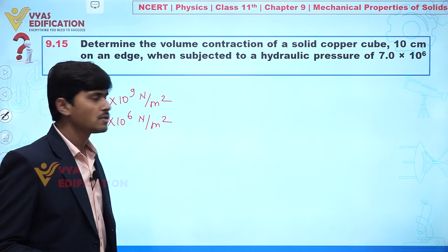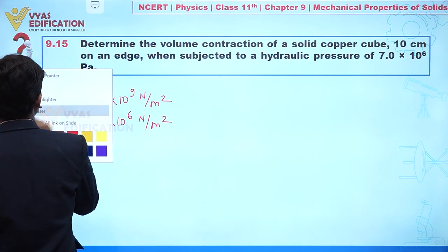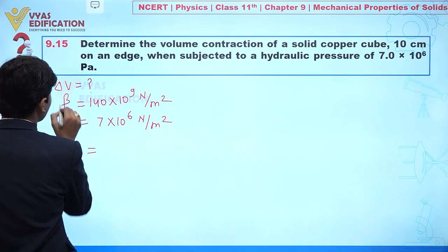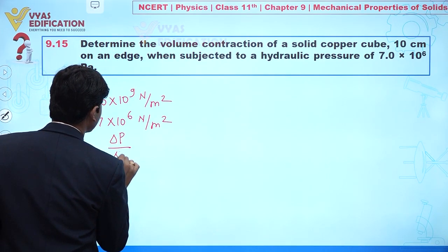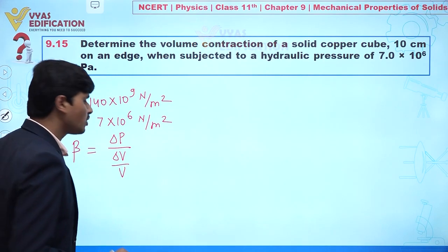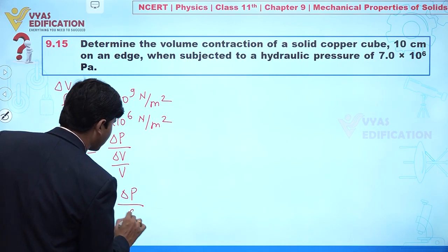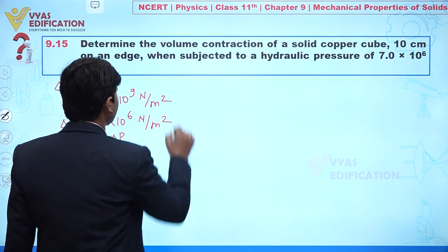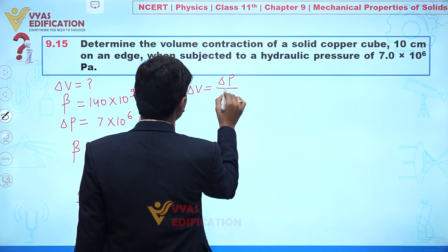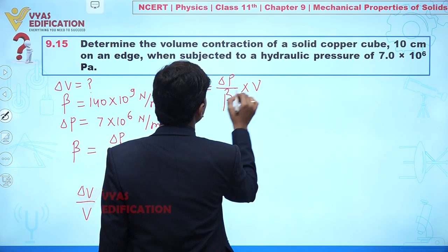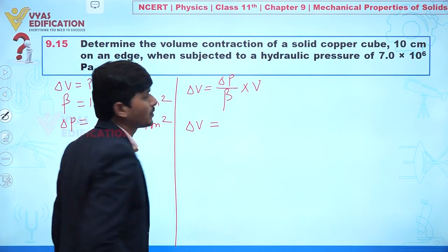Students commonly denote bulk modulus by beta (β). Bulk modulus β is given by change in pressure over fractional change in volume. So fractional change in volume equals change in pressure divided by β. Therefore, change in volume (ΔV) equals change in pressure (ΔP) divided by β, multiplied by volume V.